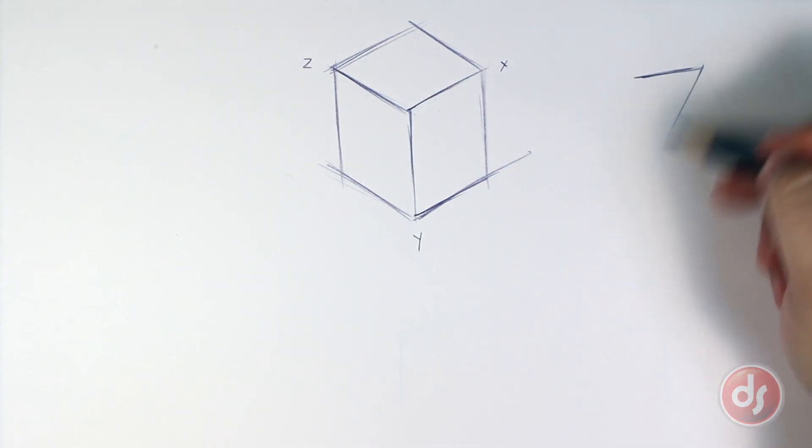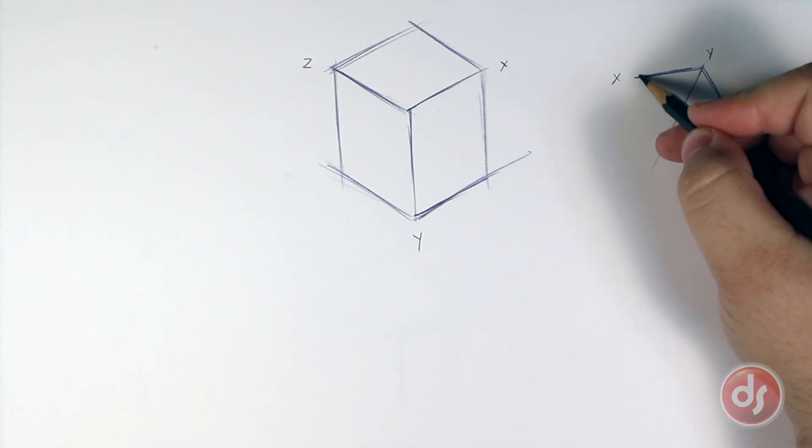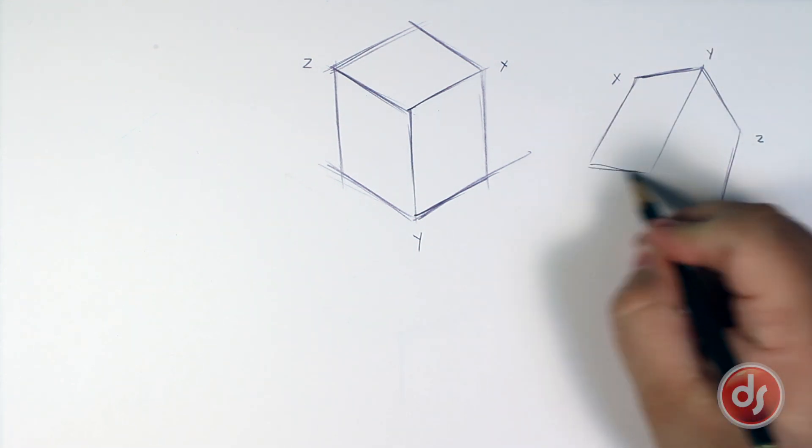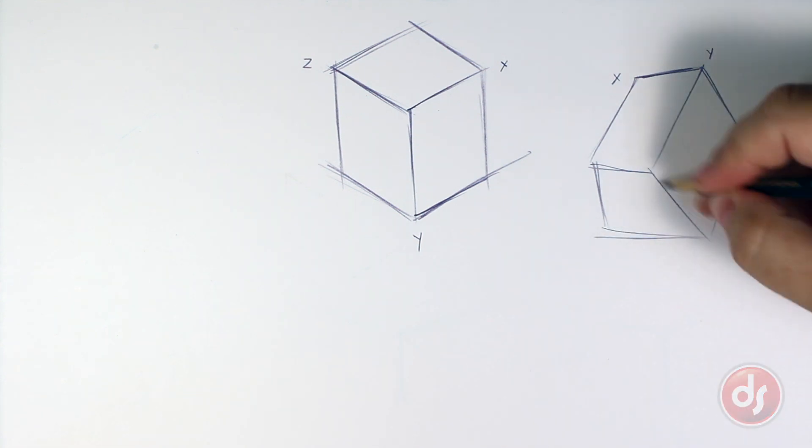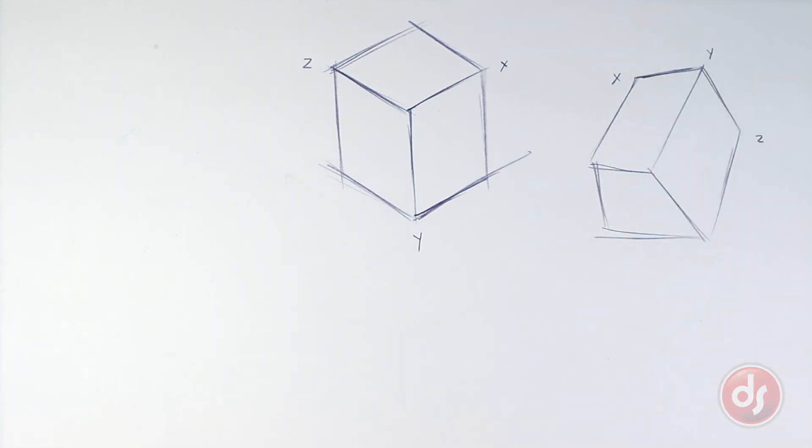Like the first box, start with our three line systems. But this time, I will make it intentionally out of isometric perspective. Hopefully you can see that this box is a little crooked or bent. So how do we fix this?